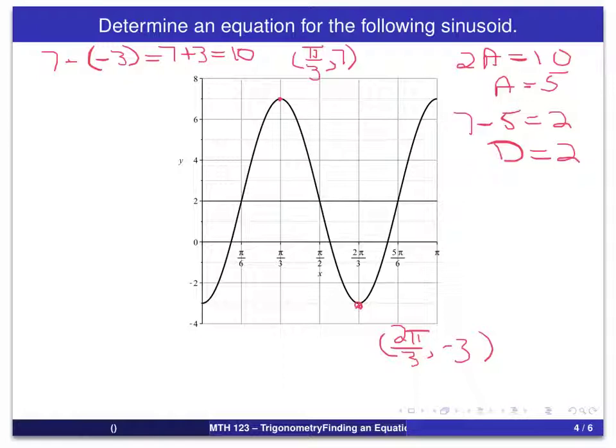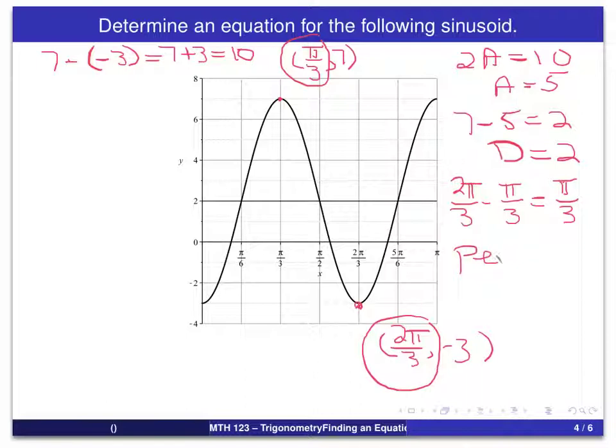Next, we're going to start working on the horizontal part of this and determine the period. For the period, what I'm looking at is this coordinate 2π/3 and the π/3, and I want to subtract those two. That's the distance between a high point and the next low point, and that is going to give us half of the period. If I take 2π/3 minus π/3, that's just like subtracting the fractions 2/3 minus 1/3 and we get π/3. That's half of the period. So we have period of 2π/3.